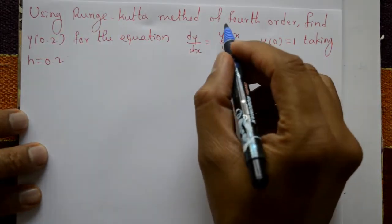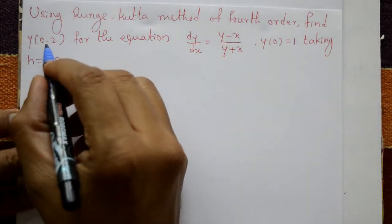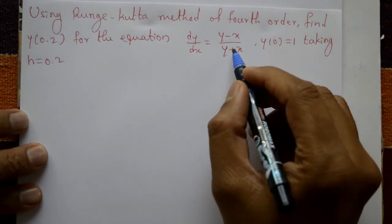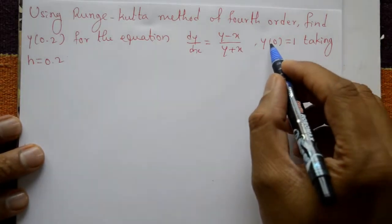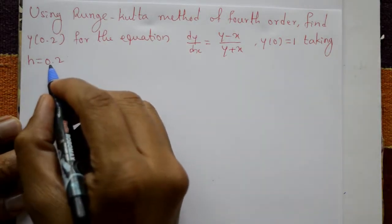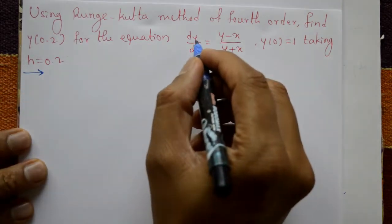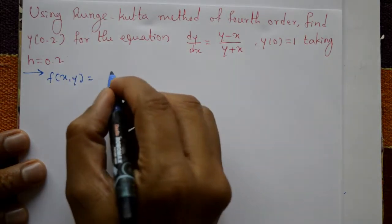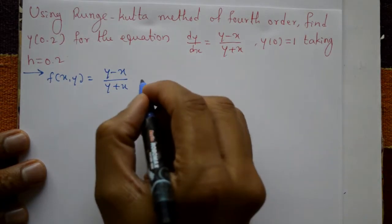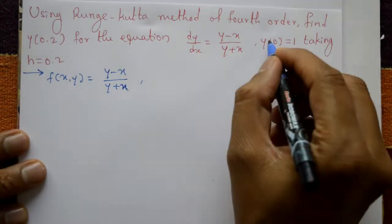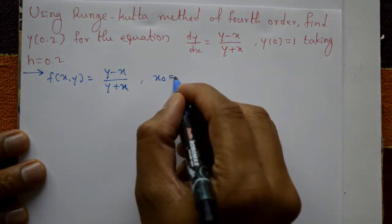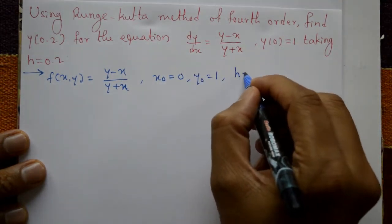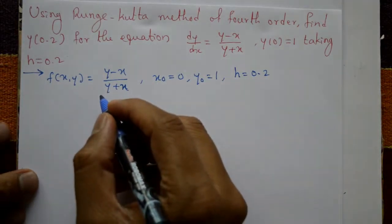Using the Runge-Kutta method of fourth order, find y(0.2) for the first order, first degree equation dy/dx equal to y minus x divided by y plus x, with initial values y(0) equal to 1, taking h equal to 0.2. Given f(x, y) equals y minus x divided by y plus x, with x naught equal to 0, y naught equal to 1, and h equal to 0.2.